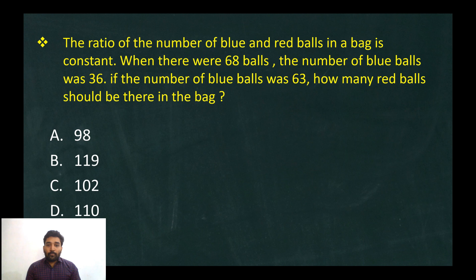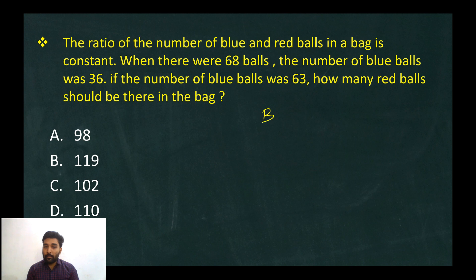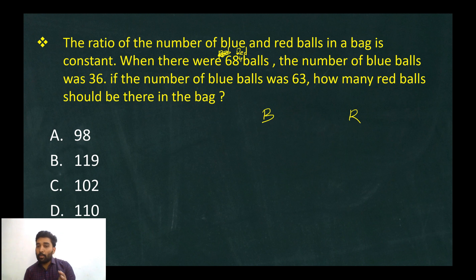The ratio of blue balls to red balls is constant. Initially, total balls are 68 and blue balls are 36, so red balls are 32. The ratio of blue to red is 36 to 32, which simplifies to 9 to 8.